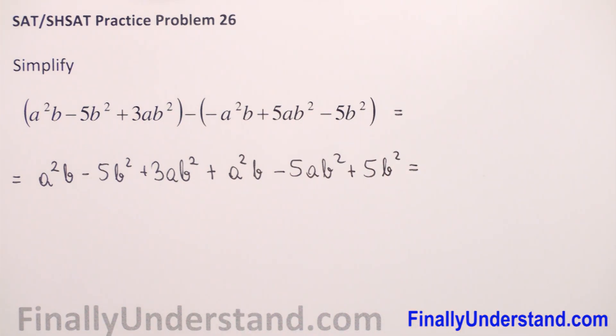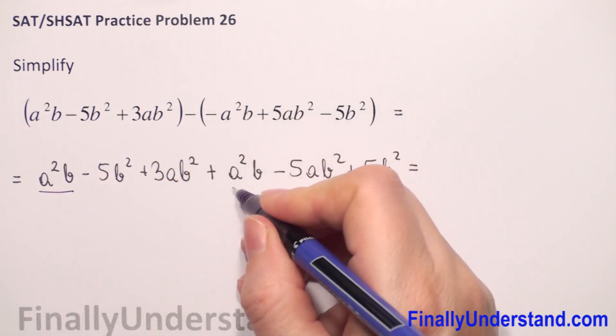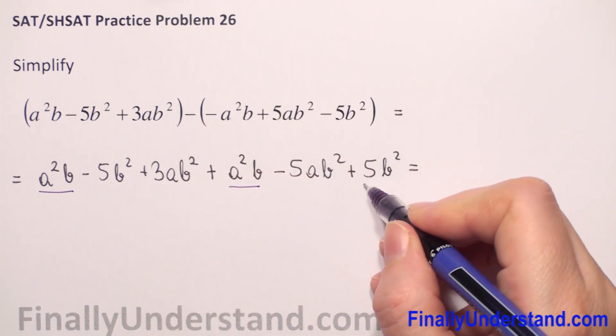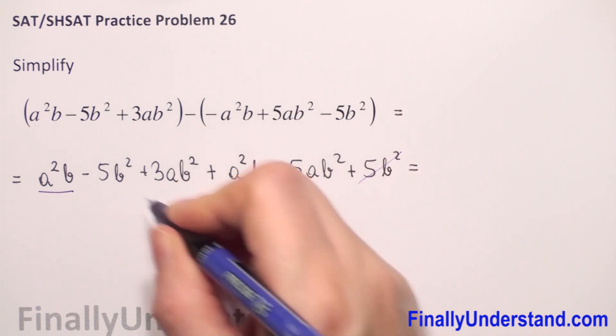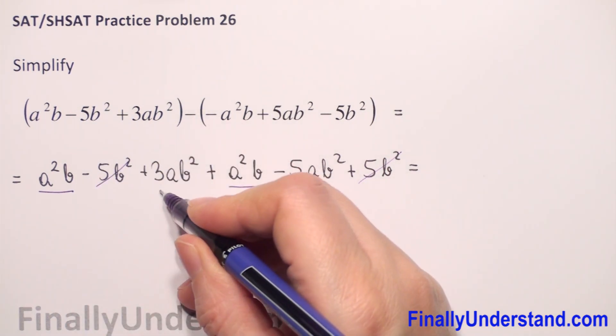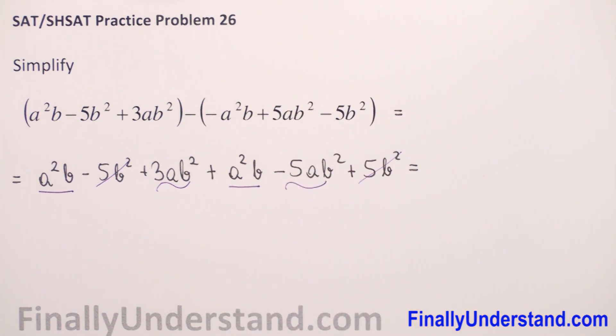Now we have to check if we have like terms. What we have here: a²b, a²b. What else? We have negative 5b² and positive 5b². So we can reduce these two terms. And what else? We have 3ab² and negative 5ab².